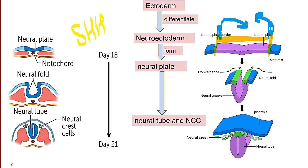So the sequence of events is that, first, simple ectoderm gets differentiated into neural ectoderm under the influence of the sonic hedgehog gene, which is produced by the notochord. This neural ectoderm gets folded within itself to form a neural fold, and finally a neural groove is formed. The outermost, lateralmost cells of this neural groove are the neural crest cells.